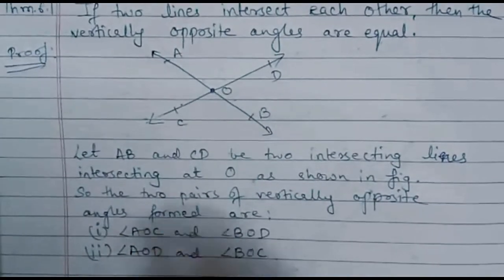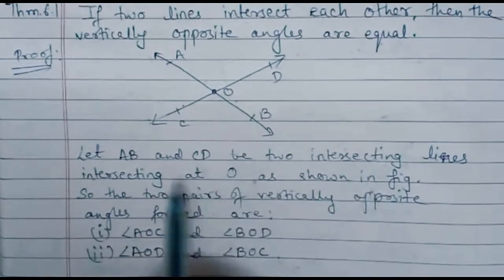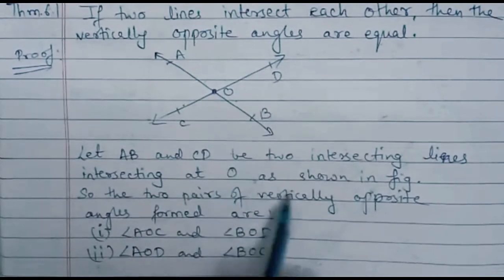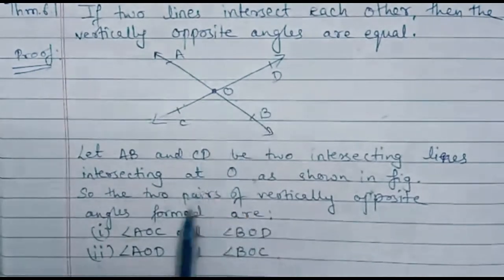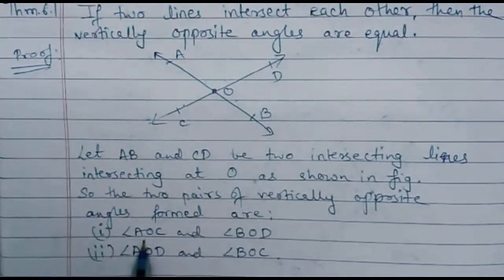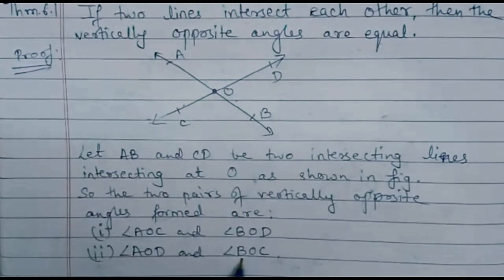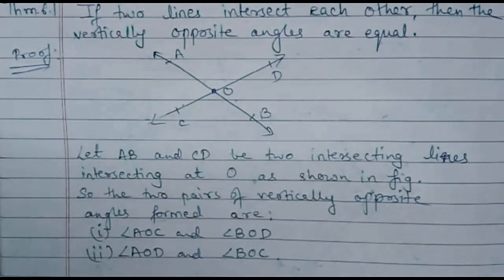Let line AB and line CD be two intersecting lines intersecting at point O as shown in the figure. So we get two pairs of vertically opposite angles which are angle AOC and angle BOD, and angle AOD and angle BOC form the second pair of vertically opposite angles.